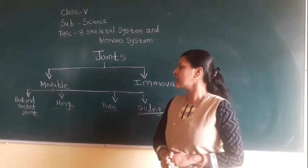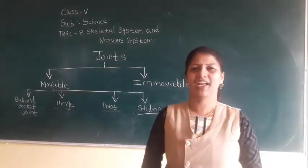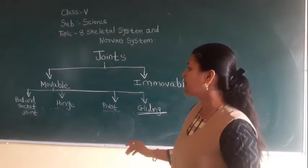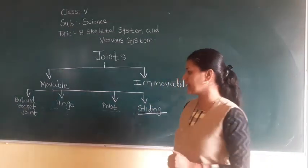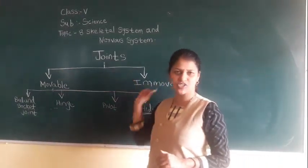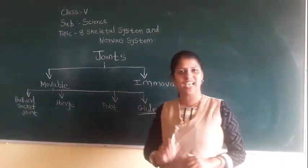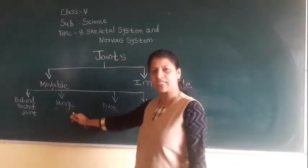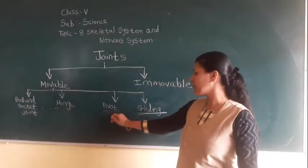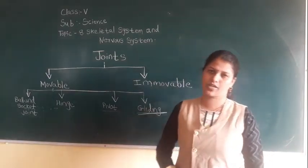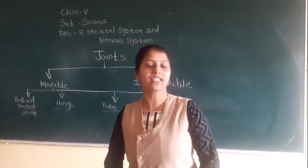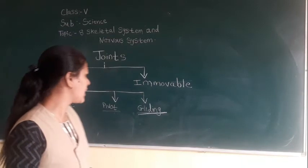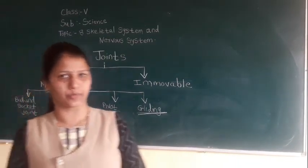So these are the types of joints. Today's work is to draw a chart in your science notebook and write about the ball and socket joint, hinge joint, pivot joint, and gliding joint — where they are present and how they move.